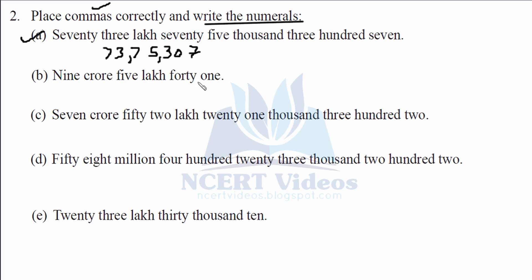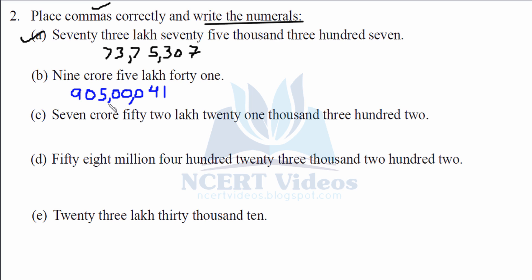Part b: 9 crore 5 lakh 41. We are asked in crores, so this is Indian standard. We write 9 crore 5 lakh — we fill the ten-lakhs place with 0 because only 5 lakhs are given. Similarly, 41 means thousands would be 000 because no thousands are given, followed by 41. The hundreds place is 0, so we get 9,05,00,041. Now we place commas according to Indian standards.